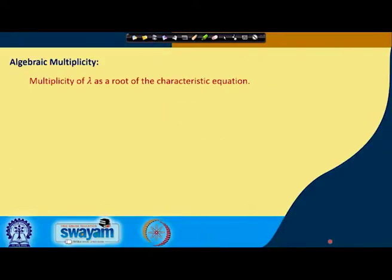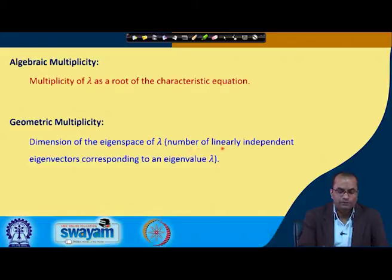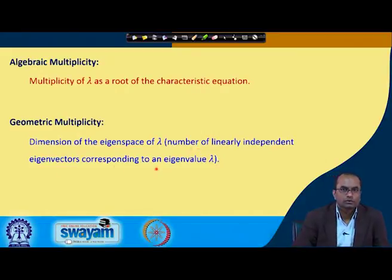What is the algebraic multiplicity? The algebraic multiplicity of lambda is the multiplicity of lambda as a root of the characteristic equation. The geometric multiplicity is the dimension of the eigenspace of lambda — that means the number of linearly independent eigenvectors corresponding to an eigenvalue lambda.